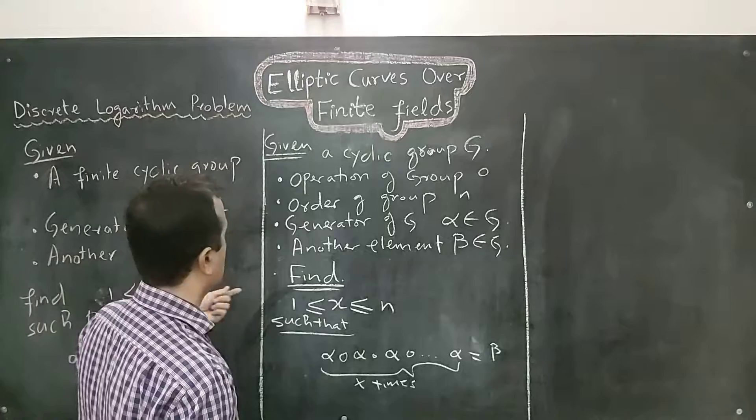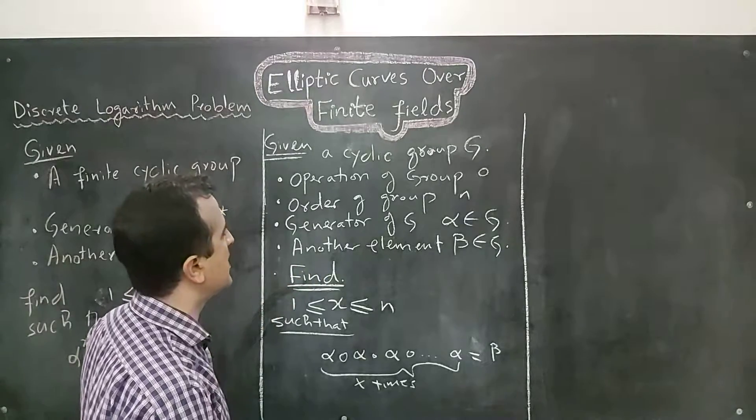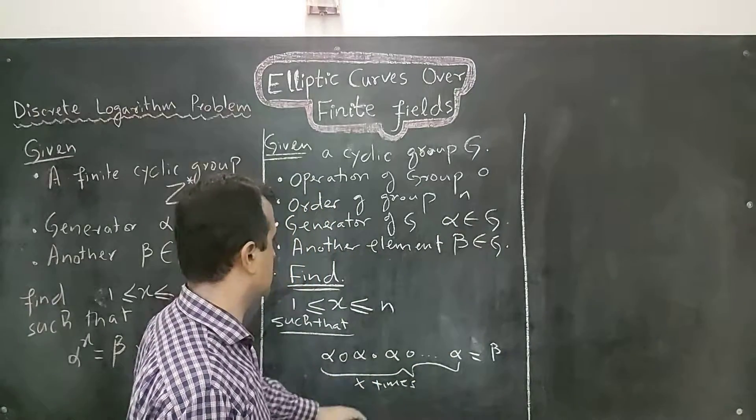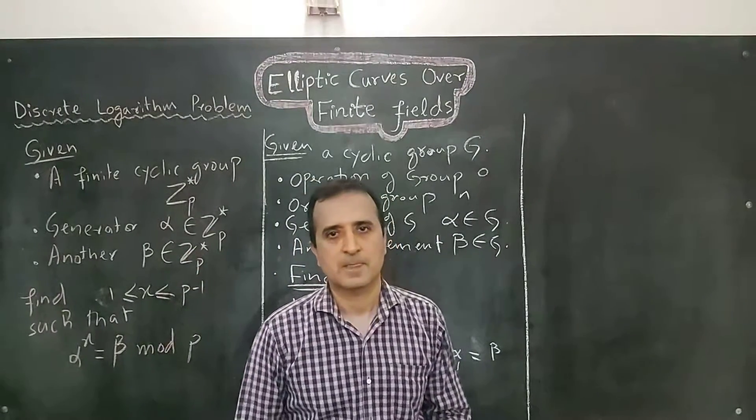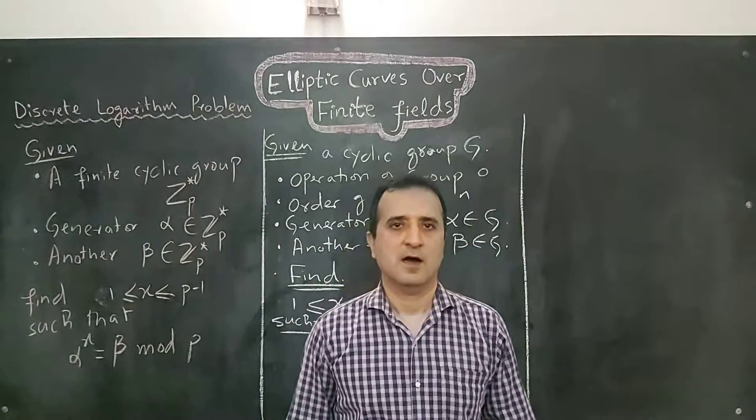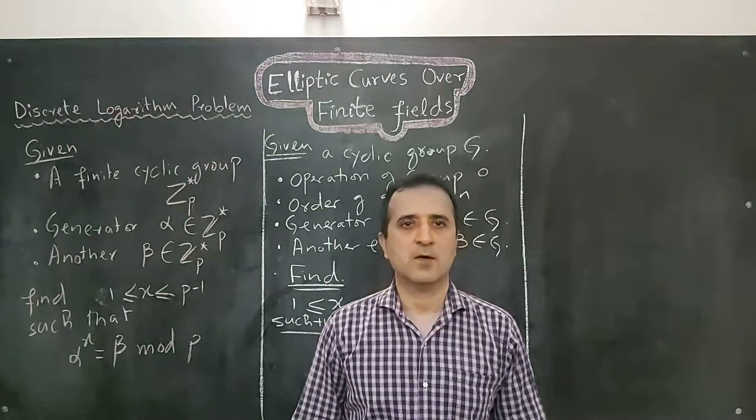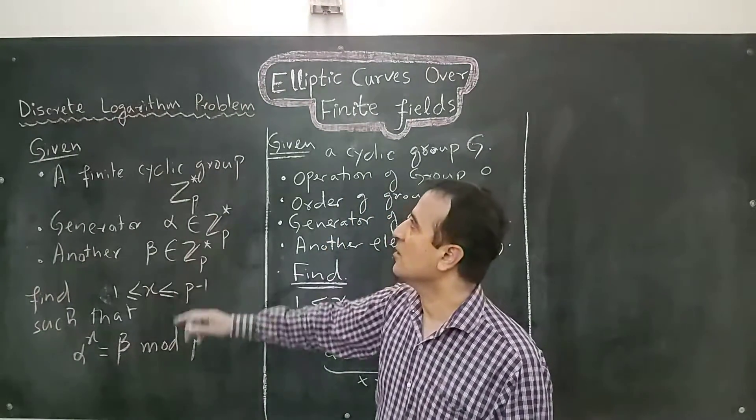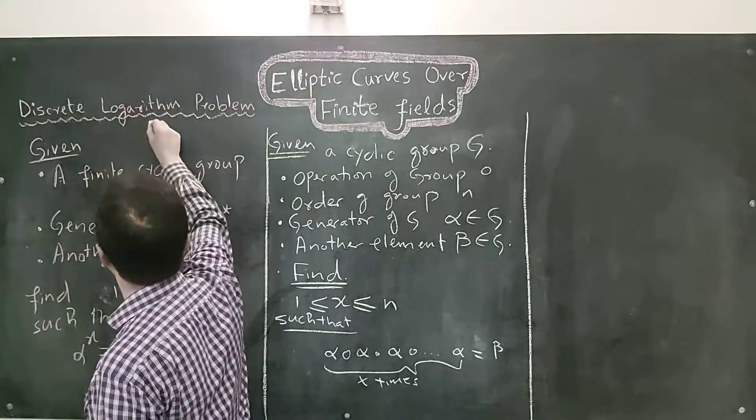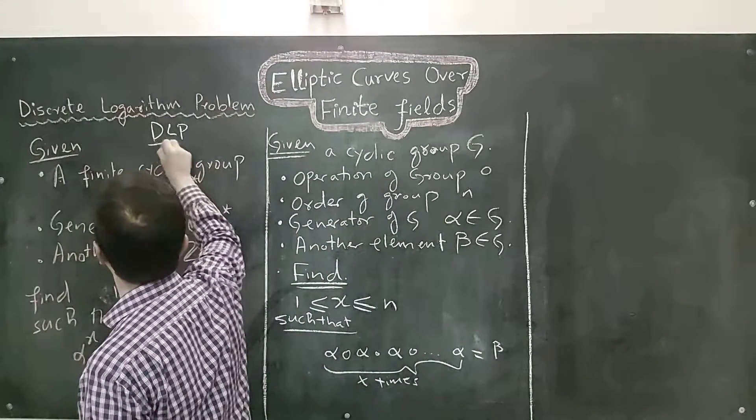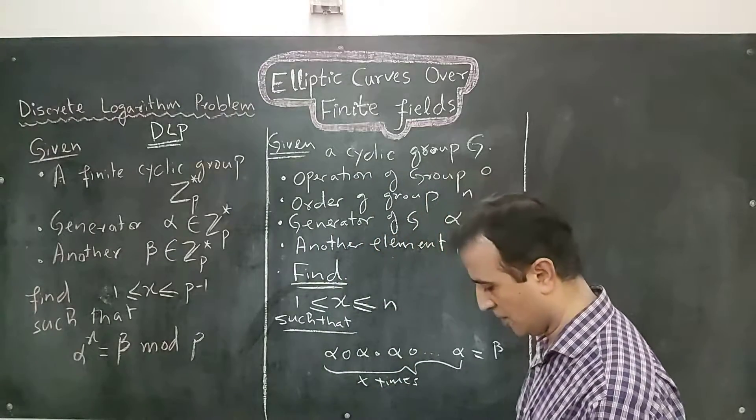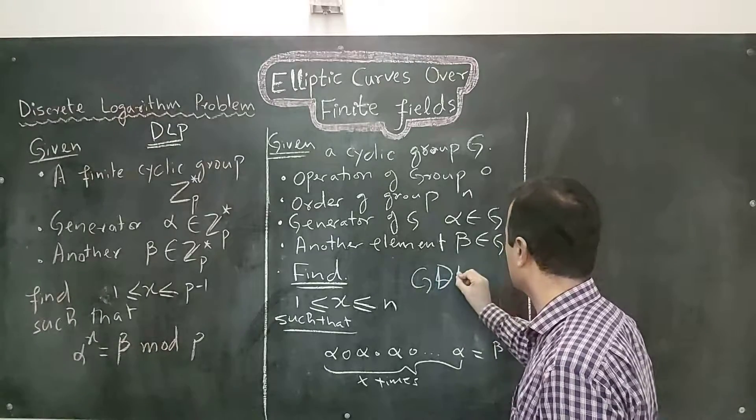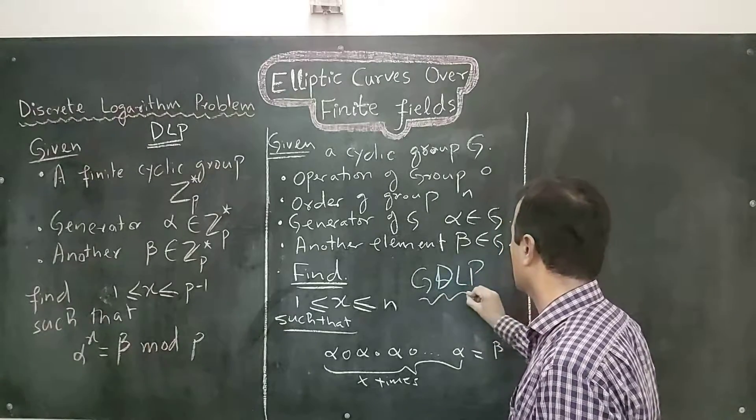Both of these definitions are same if we replace this group with multiplication group and operation with multiplication. The both definitions become equivalent to each other. Now, we have to see how we can use generalized discrete logarithm problem in elliptic curves. So, we have here discrete logarithm problem also known as DLP. We have here generalized discrete logarithm problem also known as GDLP.